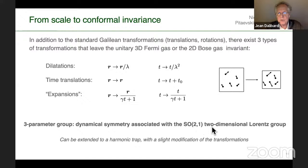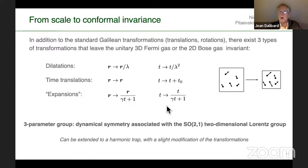This dynamical symmetry group is the two-dimensional Lorentz group SO(2,1). It was discovered by Niederer. The key point is that it applies not just to a free system but also extends to a harmonic trap (½mω²r²) with a slight modification of the transformation, as shown by multiple authors.